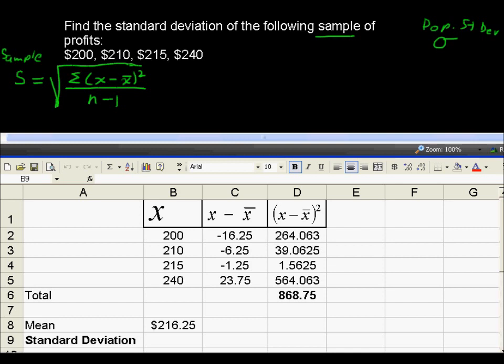First of all, this sum sign means to add up the values that are after the sigma sign. So the x minus x-bar quantity squared, and we'll have a number of those, and we'll add all of those up. n is equal to 4 here, so n minus 1 will be 3.